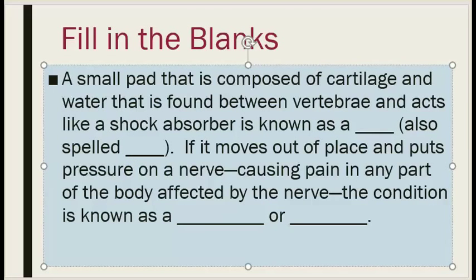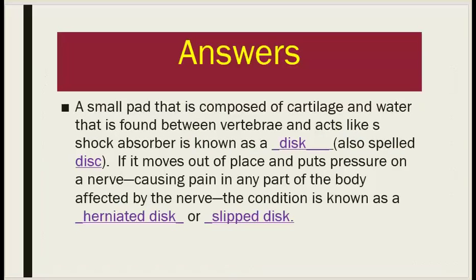Fill in the blanks. A small pad that is composed of cartilage and water, found between vertebrae and acts like a shock absorber, is known as a disc, also spelled D-I-S-C. If it moves out of place and puts pressure on a nerve causing pain in any part of the body affected by the nerve, the condition is known as a herniated disc or slipped disc.